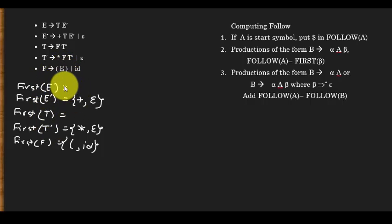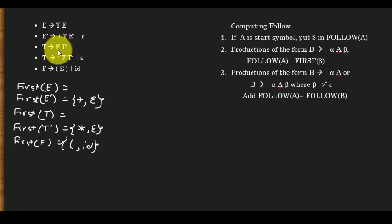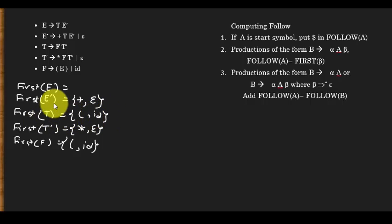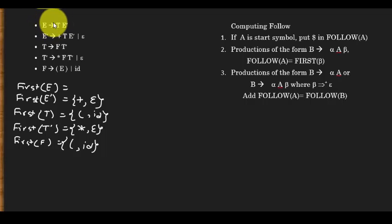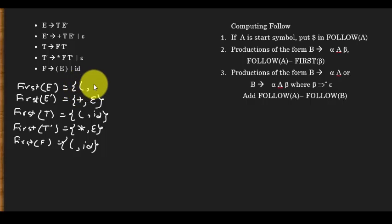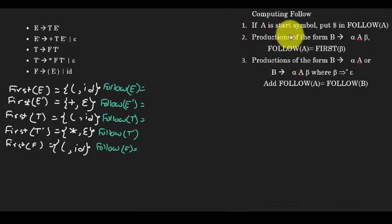Now let's compute the ones we skipped because their leftmost symbol was a variable. First of T is first of F, because the leftmost symbol of T's production is F. First of F is {opening parenthesis, ID}, so first of T is also {opening parenthesis, ID}. Going back to E, first of E is first of T, which gives us {opening parenthesis, ID}.